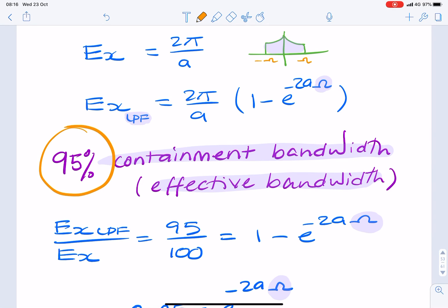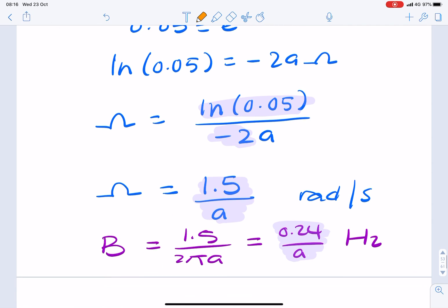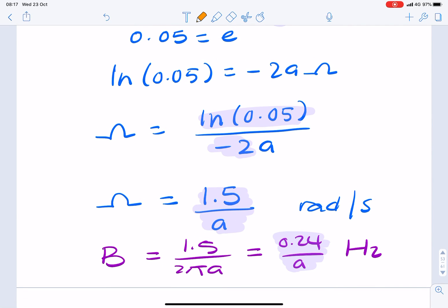And this 95% could be replaced with 99%, or 90%, or any other number. It's the effective bandwidth where that percentage of the total energy is retained. We found it in radians per second, and in hertz. So your final answer would be this, as a function of a, which is a constant. If the question had given us a, we would have been able to calculate the effective bandwidth.